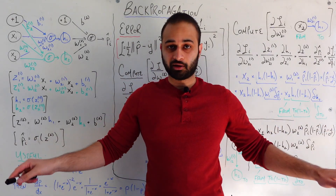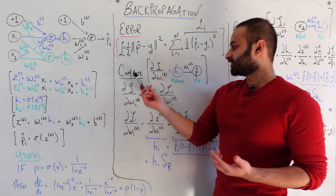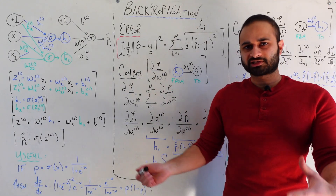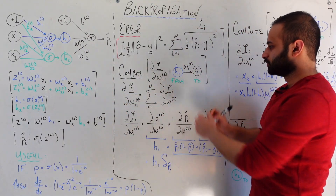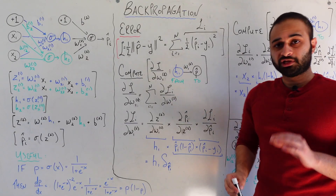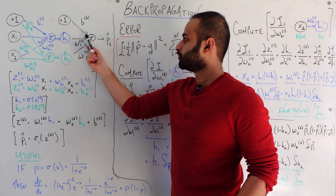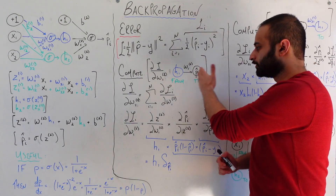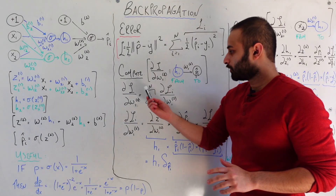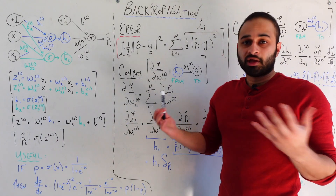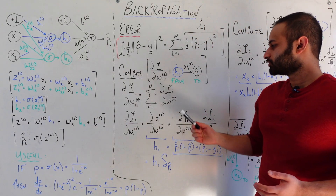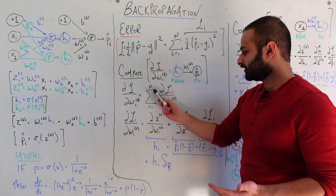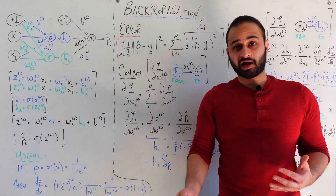Let's look at that process concretely. Say we want to calculate the partial derivative of the error function L with respect to w12. In the diagram, w12 is the arrow that begins at h1 and runs through an activation function to pi-hat — so the from-node is h1 and the to-node is pi-hat. Since L is the sum of individual L sub i terms, we can just compute the sum of partial L sub i with respect to w12. So all we really have to do is calculate each of these individual terms: the partial derivative of L sub i with respect to w12.